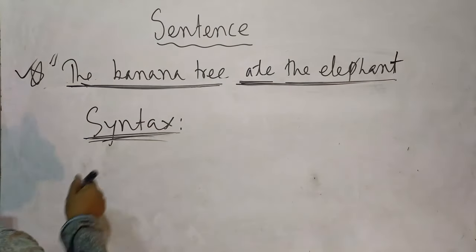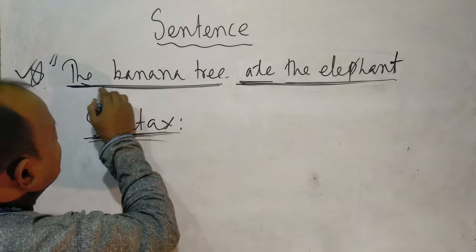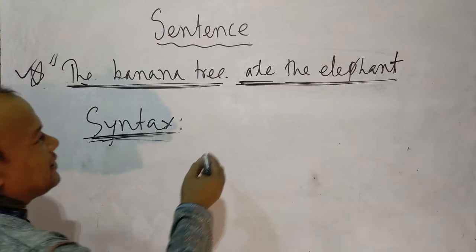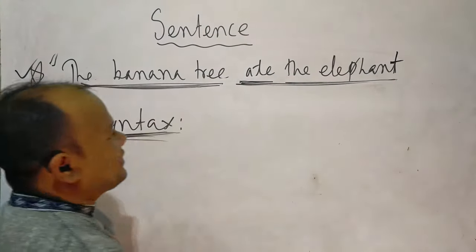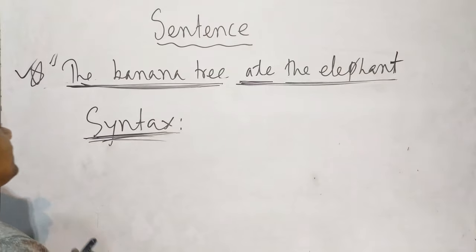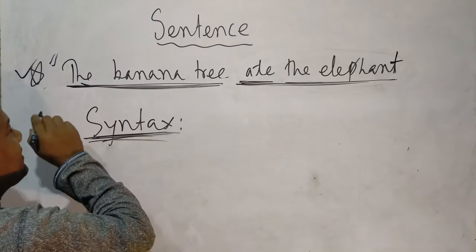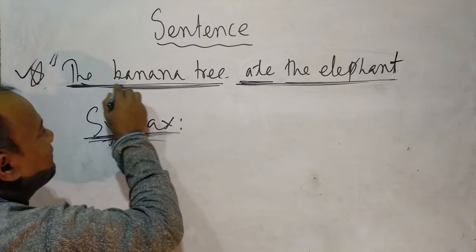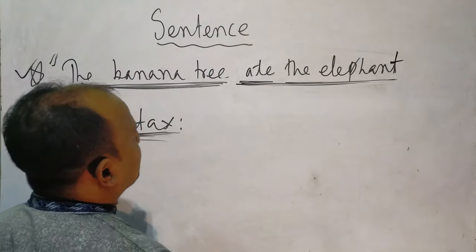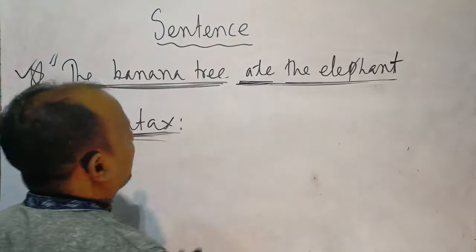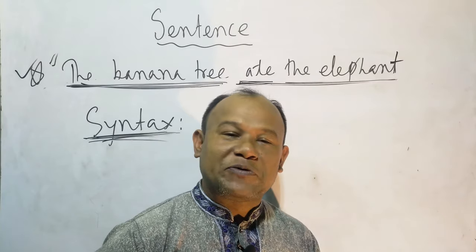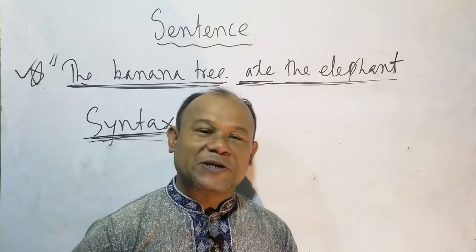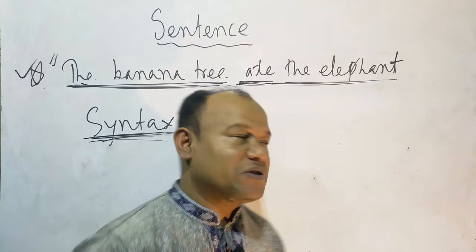So if we think on the basis of syntax — yes, 'the banana tree' is the subject, 'ate the elephant' is the predicate. The banana tree is the subject, 'ate' is the finite verb. Now we have to think about whether the sentence has the characteristics of semantics or not.